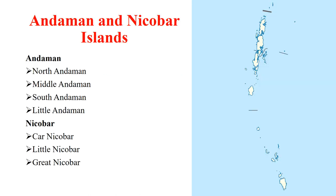Andaman and Nicobar islands are divided into two groups: the Andaman group and the Nicobar group. The major islands in the Andaman group are North Andaman, Middle Andaman, South Andaman, and Little Andaman. The important islands in the Nicobar group are Carnicobar, Little Nicobar, and Great Nicobar.